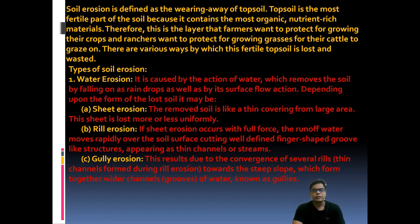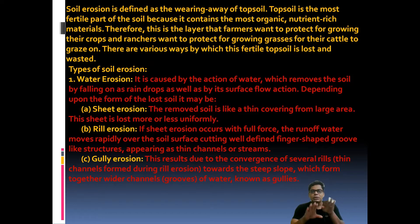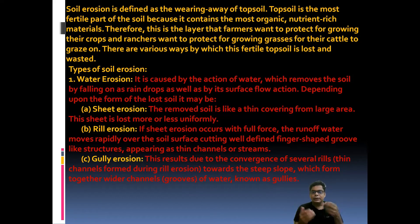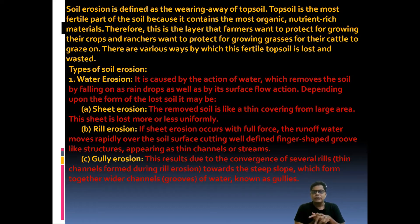Depending upon the form of the lost soil, there are sub-types. First is sheet erosion, second is rill erosion, and third is gully erosion. Sheet erosion removes the soil like a thin cover — like a blanket — from a large area. During heavy rainfall, just one or two centimeters of top soil across a large area is washed out, and this is called sheet erosion.